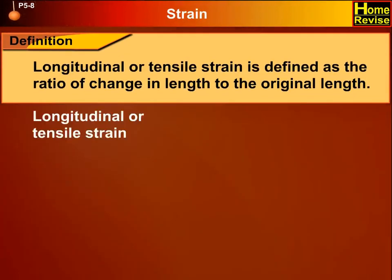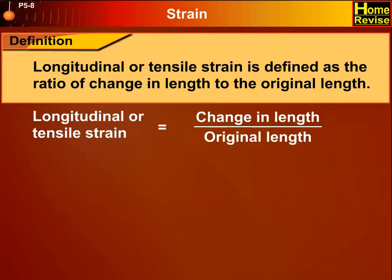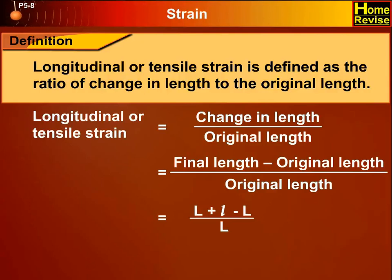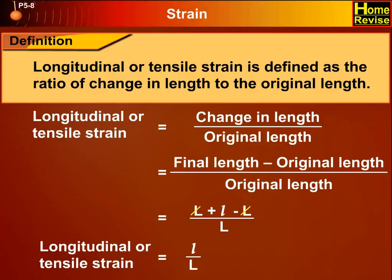Longitudinal or tensile strain is equal to change in length upon original length, which equals final length minus original length upon original length. That equals (L + ΔL − L) upon L. L minus L cancels, so longitudinal or tensile strain is equal to ΔL upon L. This is equation 5.4.